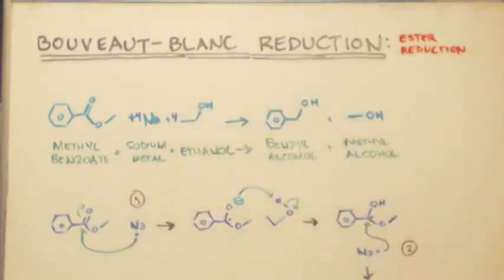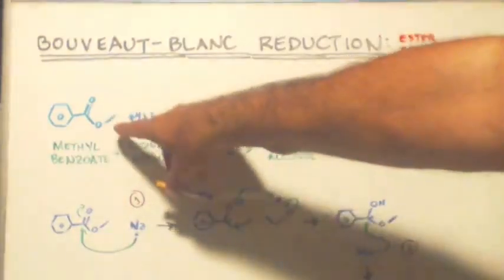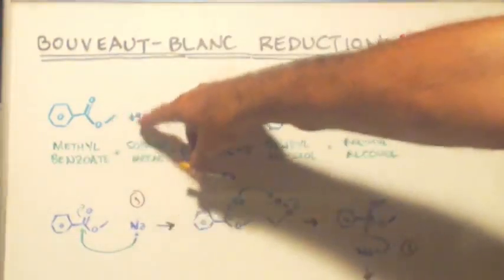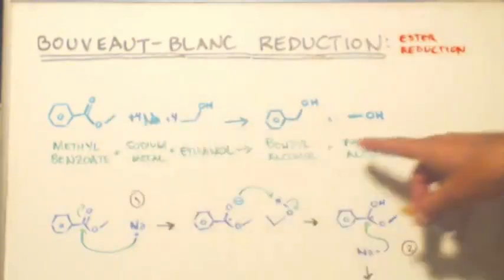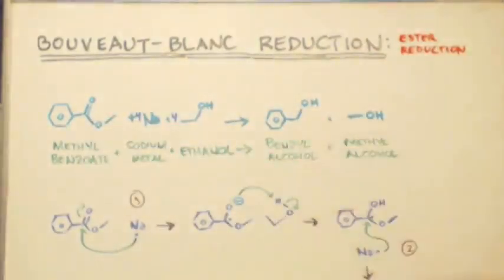Here's the formula for it, methylbenzoate plus four moles of sodium and four molecules of ethanol. And then this will break apart, whatever's on this, this is a methyl group so you get methanol. This is a benzo group so you get benzoalcohol.